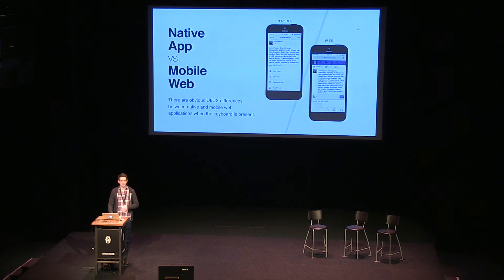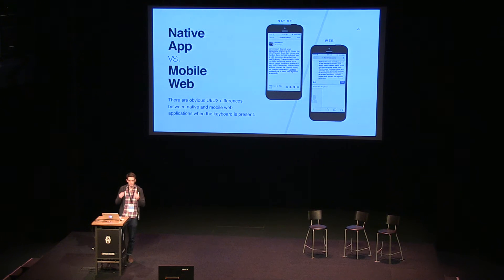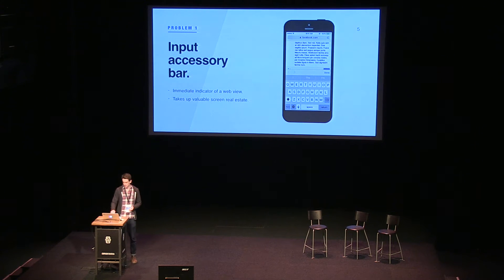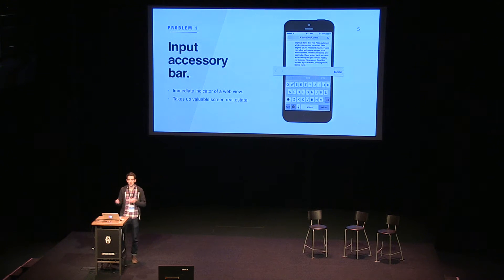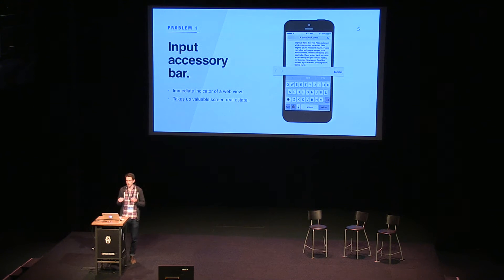I'm going to look today through some of the current solutions for bringing the appearance of the keyboard in line with what we expect from a native application, and look towards potential future improvements. The first problem is the input accessory bar that appears by default whenever the keyboard appears in a web view. It doesn't necessarily break anything, but in the already space-constrained mobile environment, it uses up precious screen space. And if our goal is to appear as native as possible, we'd like the ability to toggle its appearance, because native text fields don't have any toolbar by default. We do have the ability to remove it, but with some caveats.